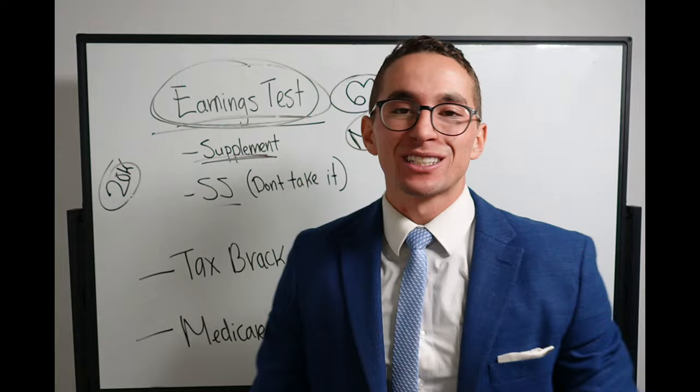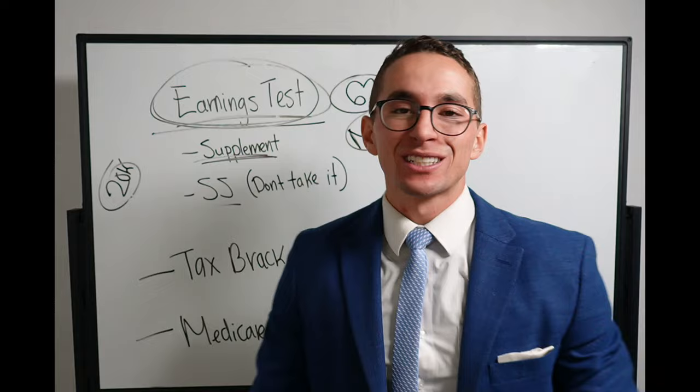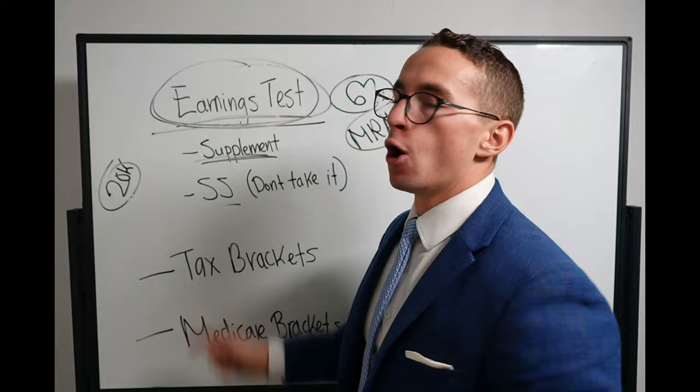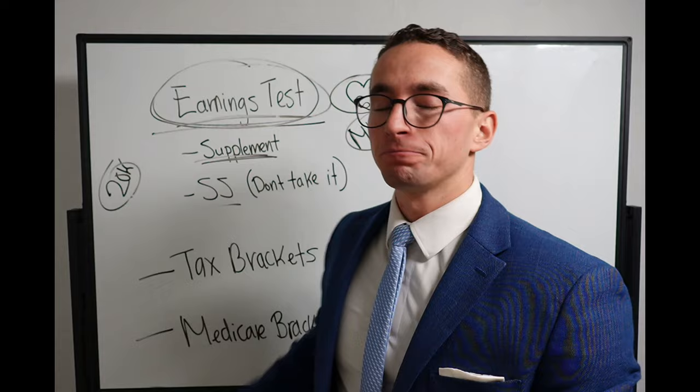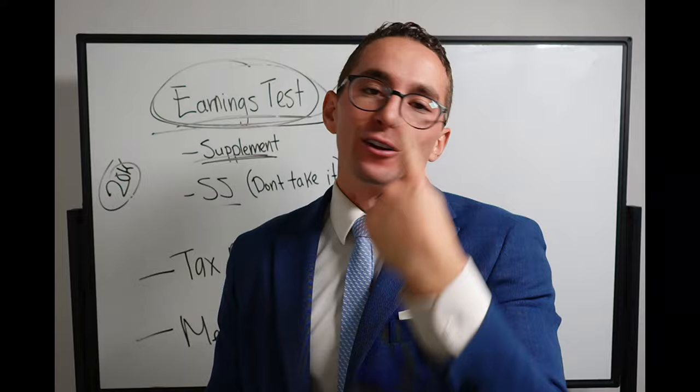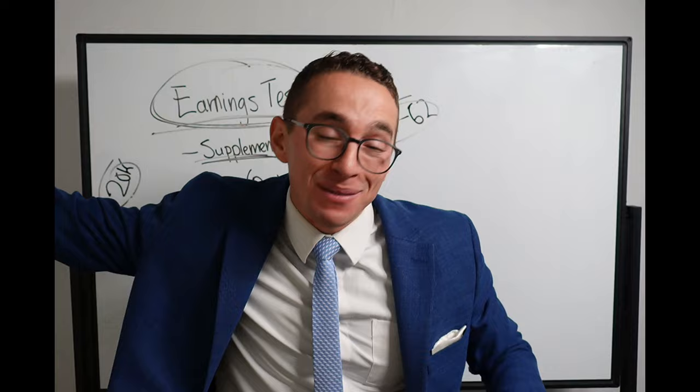Whatever it is, you can make up to 20 grand or the limit without affecting your first supplement or social security at all. But the moment you go over that limit, for every $2 you make over the limit, your first supplement or your social security is going to be reduced by $1. So if you earn $2 over the limit, they're going to take a dollar from the first supplement that next year. If you make 20 grand over the limit, then $10,000 will be taken from your first supplement that next year. That's how it works.